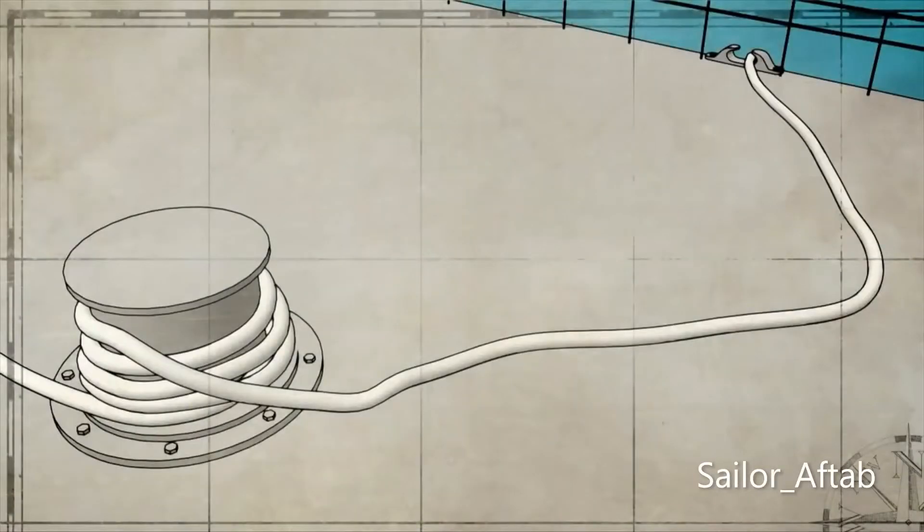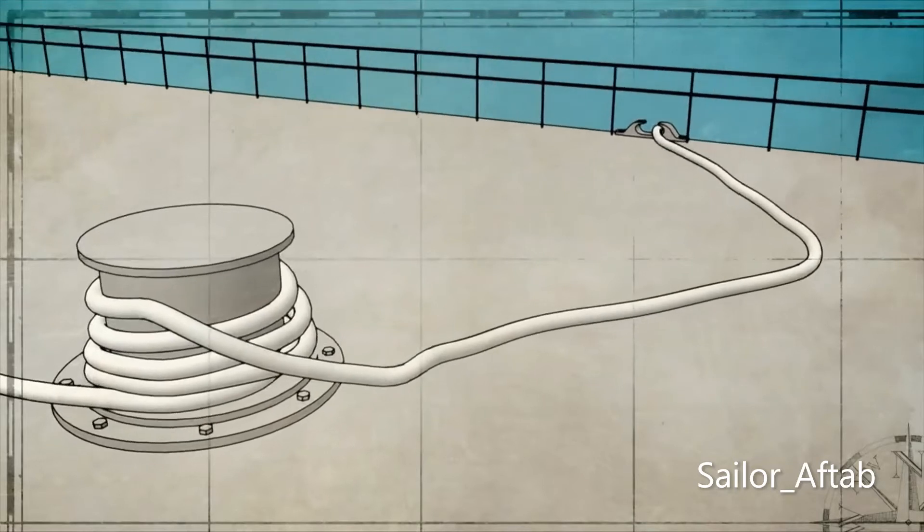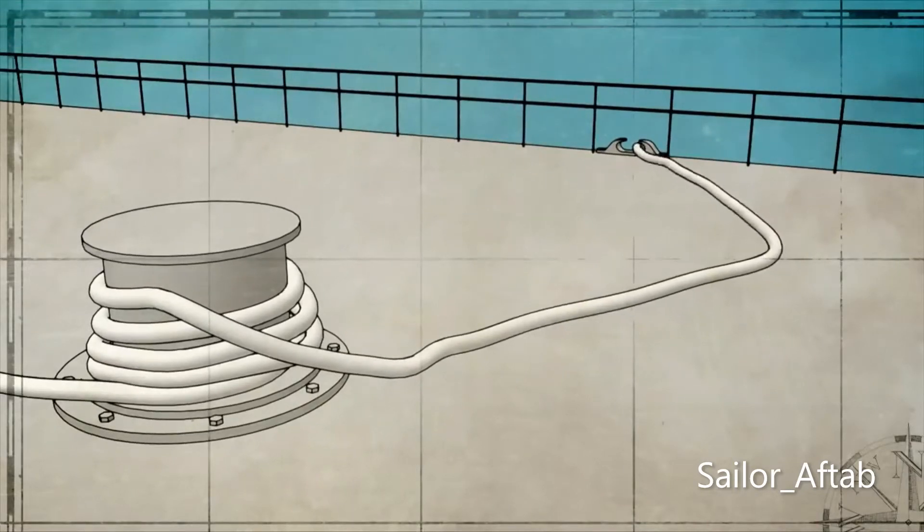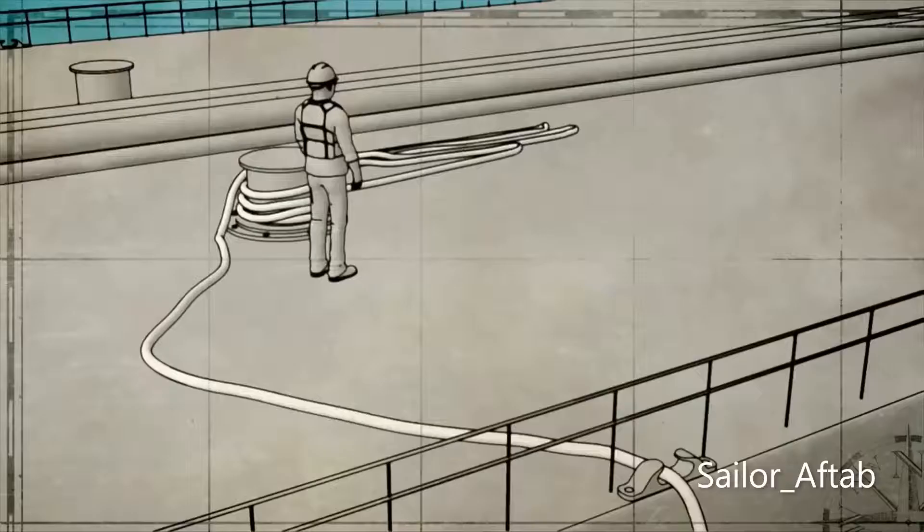A loop, coil, or section of loose line can injure or kill if the line suddenly tightens. These hazards are commonly known as bites.